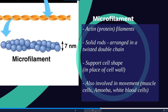Microfilaments are made of actin proteins. They are solid rods arranged in a twisted double chain and help to support cell shape in place of a cell wall. They're also involved in helping organisms like an amoeba and white blood cells to move around, by pushing against the cell membrane for movement.